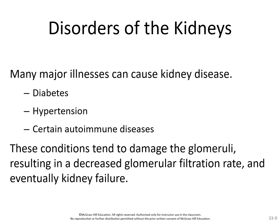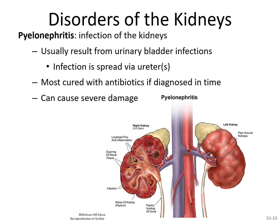Some autoimmune diseases also cause increased throughput through the glomerulus and kidneys. Another disorder is pyelonephritis — an inflammation or infection of the kidneys. It usually results from urinary bladder infections that spread up the ureters into the kidneys. Most cases can be cured with antibiotics if diagnosed in time. However, the cutaway diagram shows localized pus and inflammation, and over the long term that causes scarring of renal tissue. This scarring can cause blockages, crowd out normal kidney tissue, and cause severe damage.